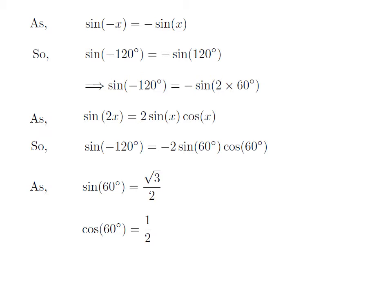We know the value of sine of 60 degrees is equal to square root of 3 upon 2, and the value of cosine of 60 degrees is one half.